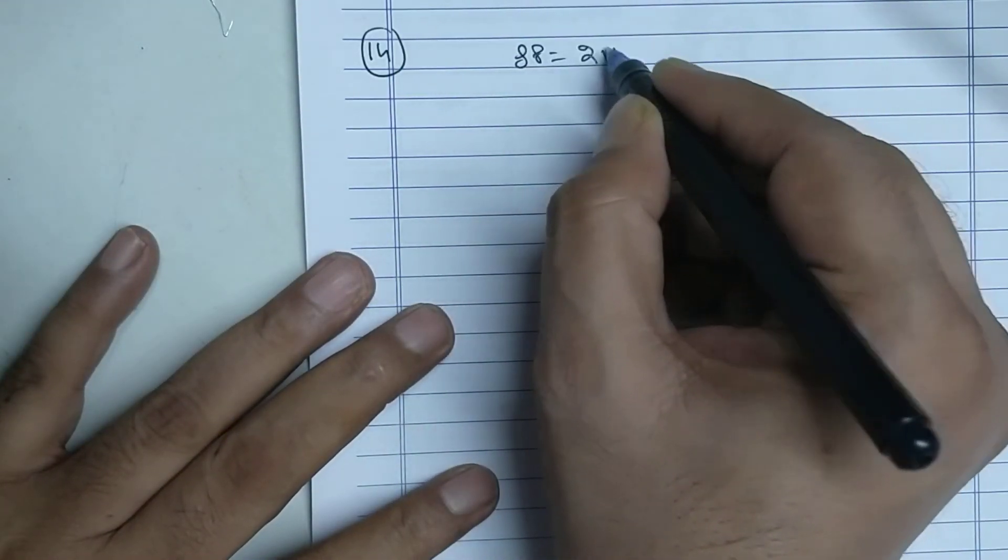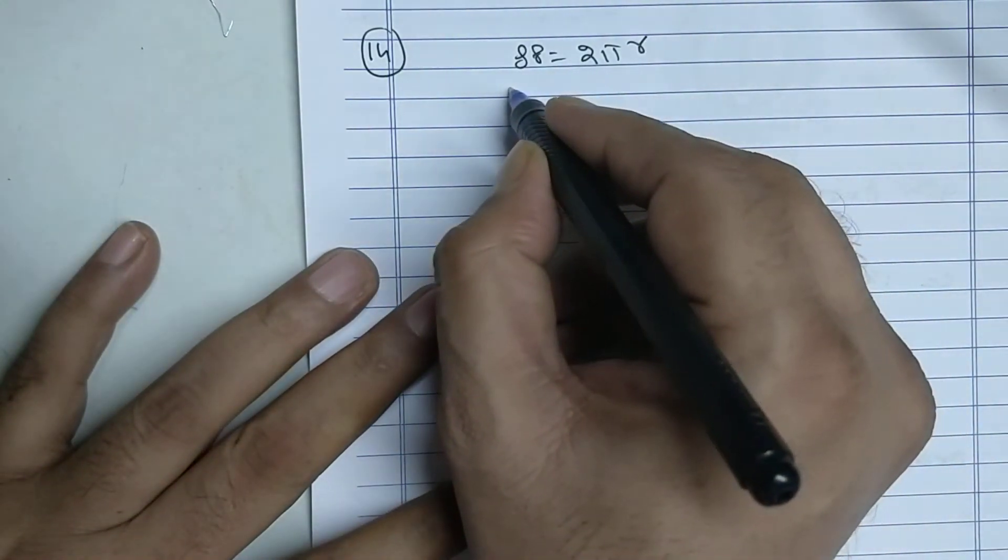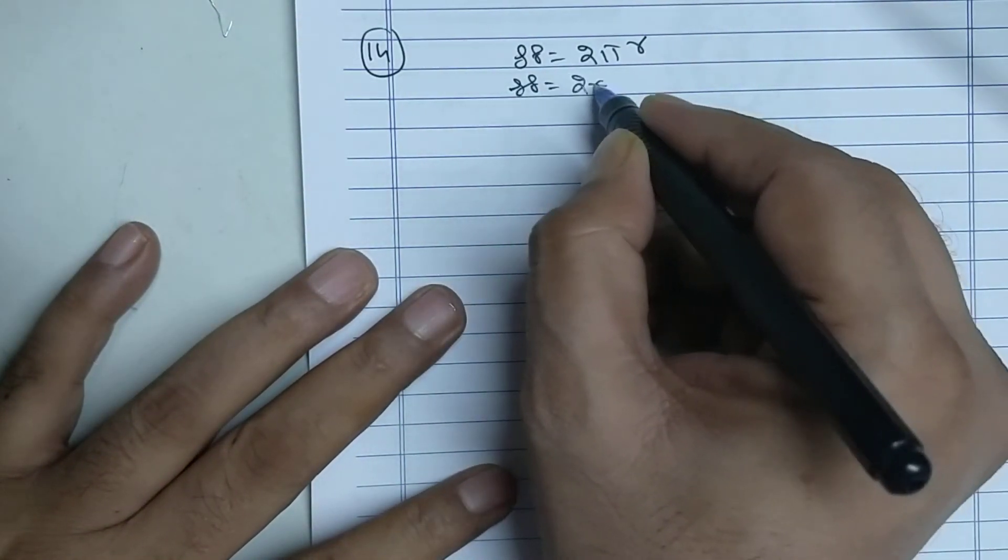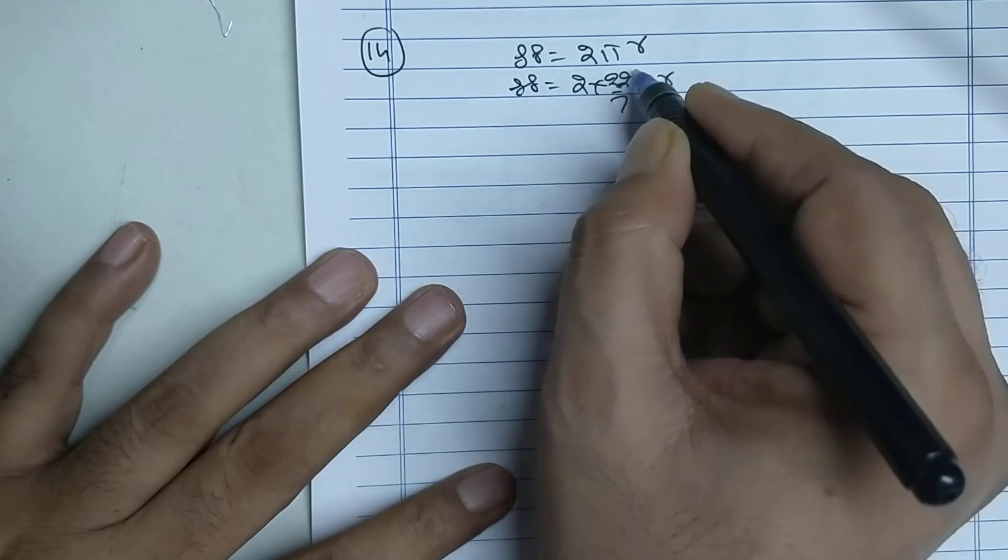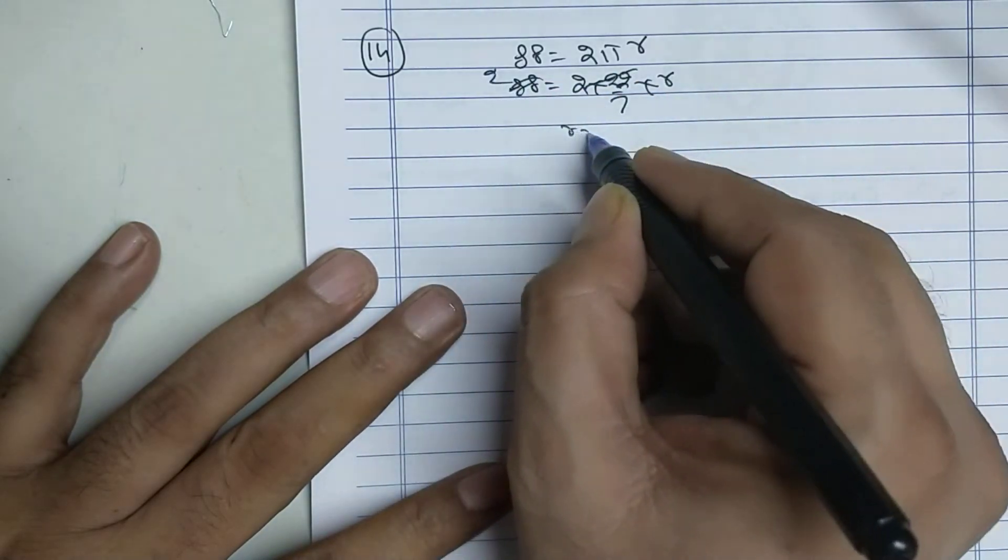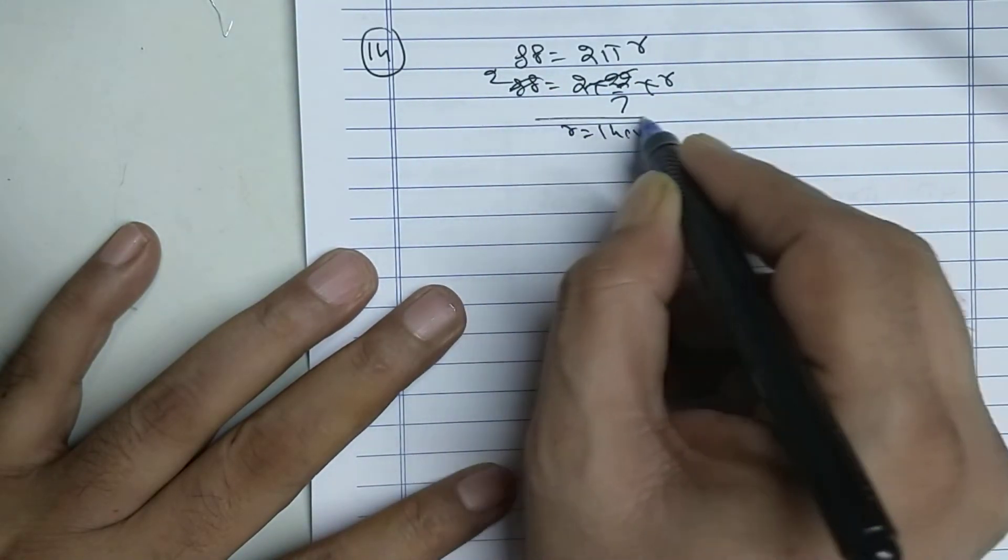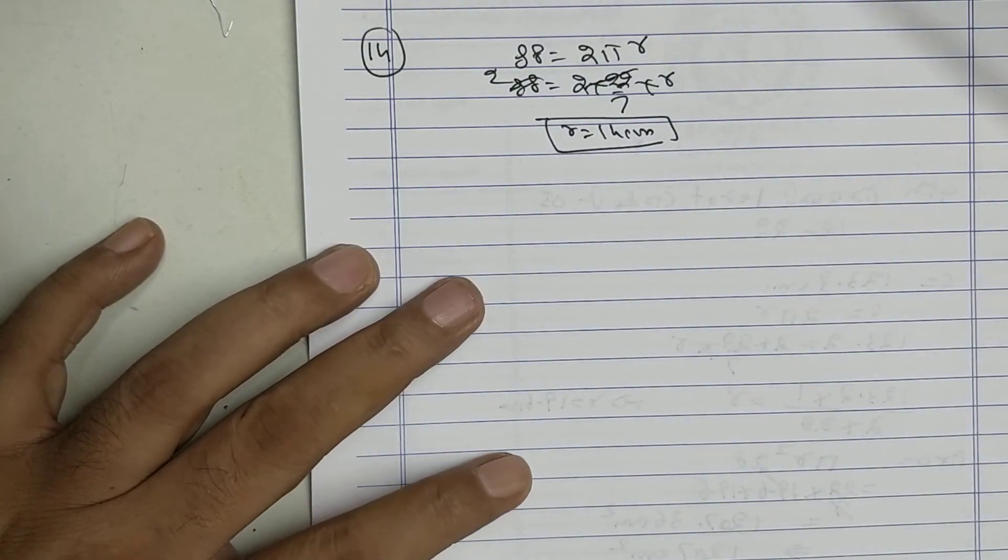88 equals 2πr. 2 into 22 upon 7 into r, so r equals 14 cm.